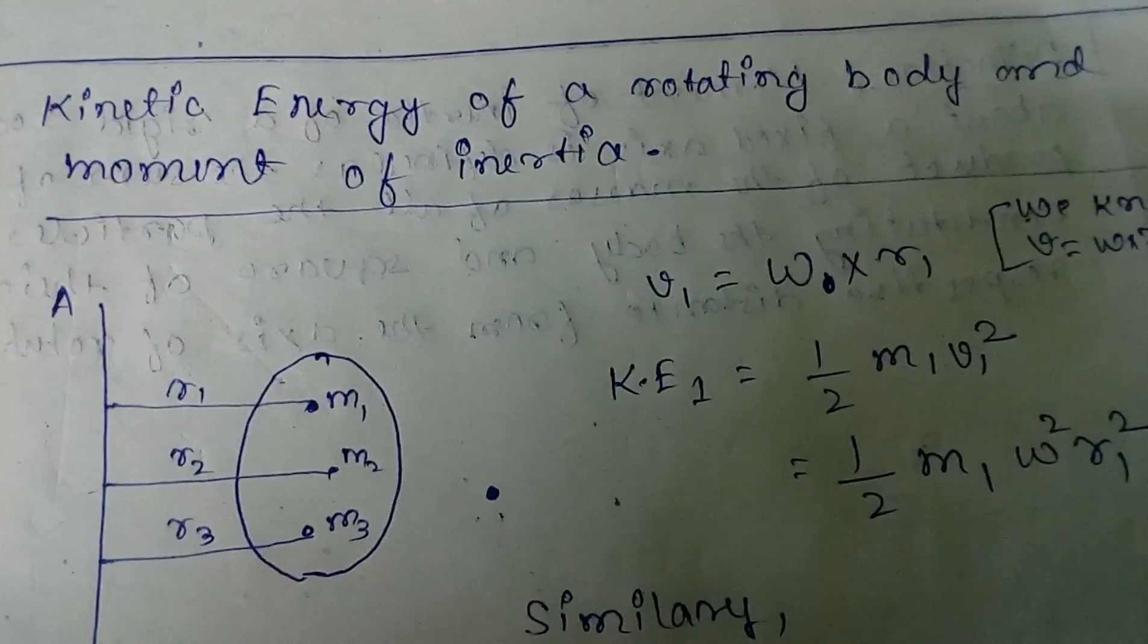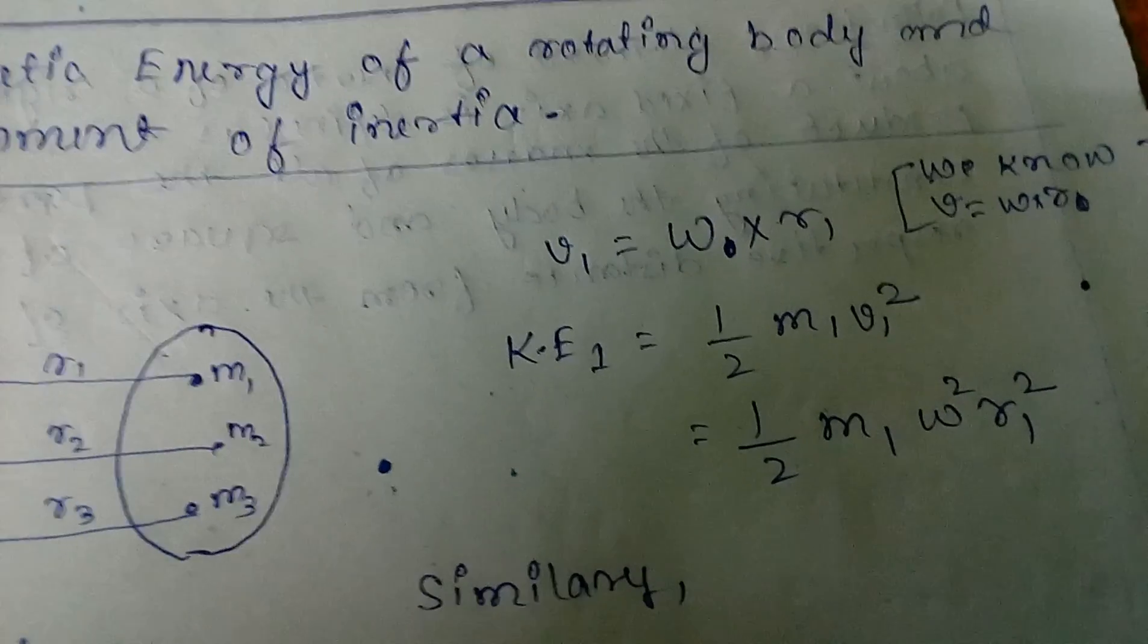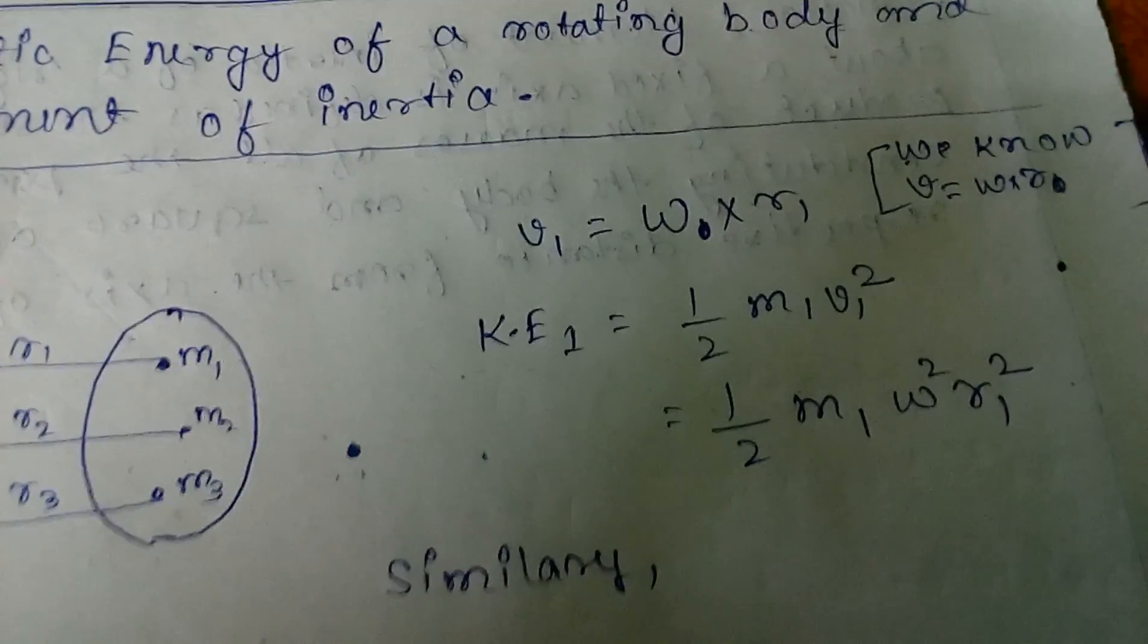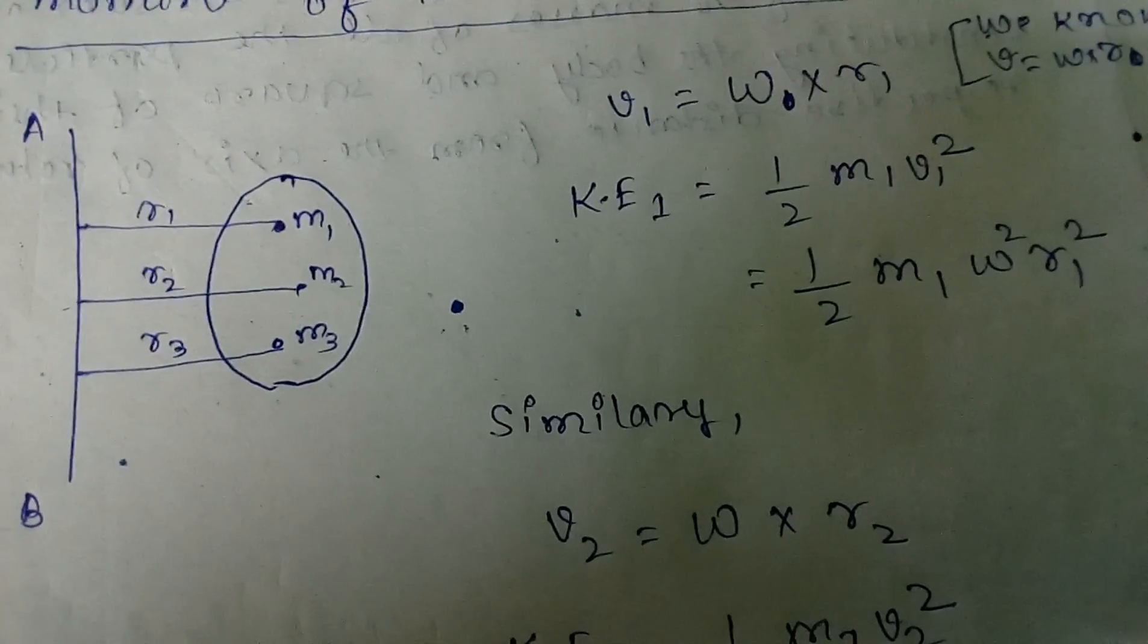So the respective kinetic energy of the point mass m1 is equals to half m1 v1 square. And putting the value of v1, we get half m1 omega square r1 square.